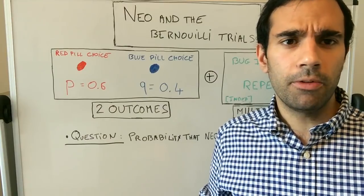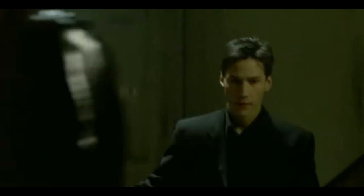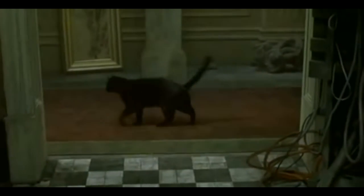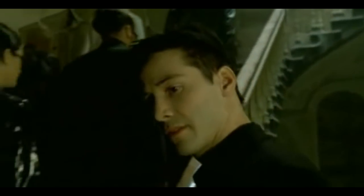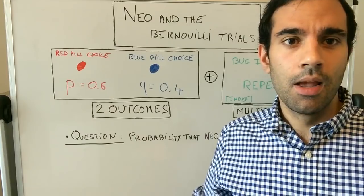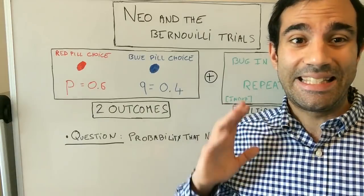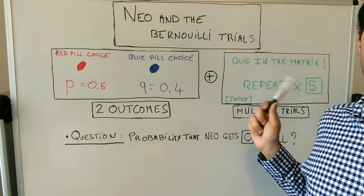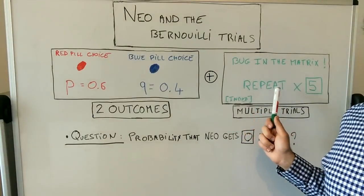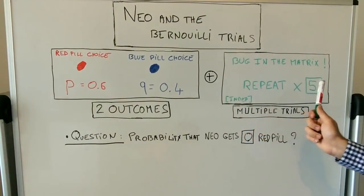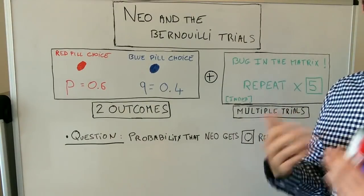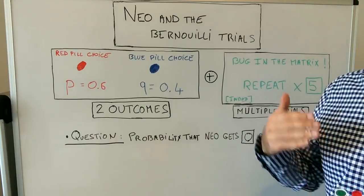Now let's assume that there's a bug in the matrix — do you remember the cat scene? We're going to assume it's exactly the same kind of bug, and we will end up with a repetition five times of the exact same scene, meaning that Morpheus is going to ask the pill question multiple times.